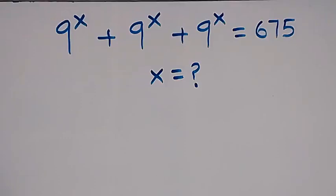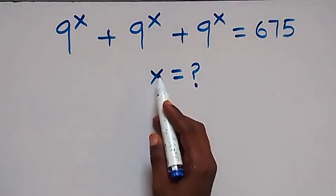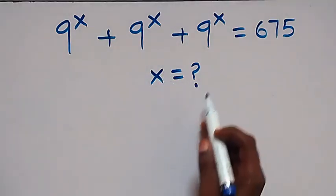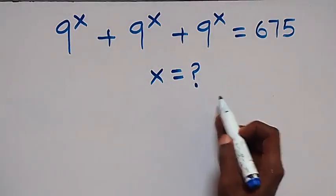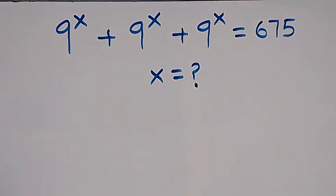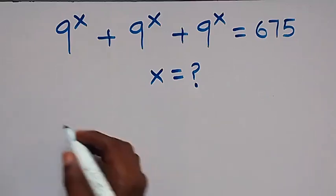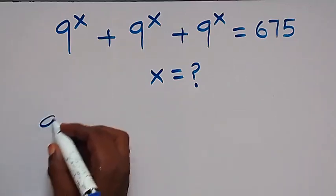Hello, you are welcome. How to solve this nice exponent problem: we have 9 to the power x plus 9 to the power x plus 9 to the power x equals 675. Let's factor 9 to the power x out here.